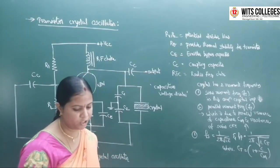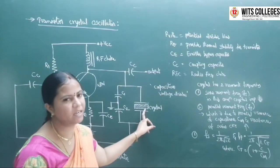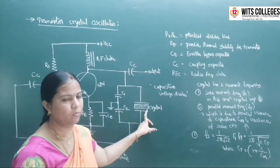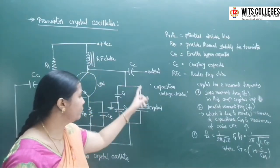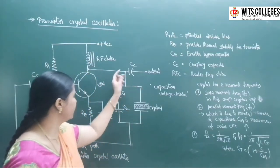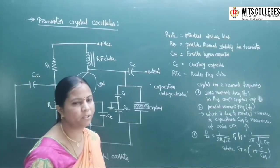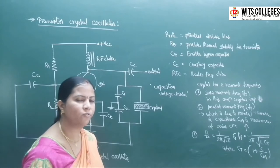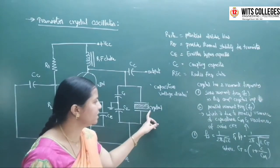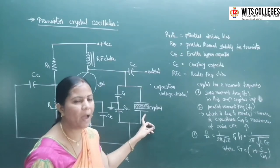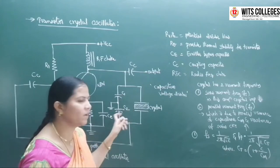Coming to the circuit operation — in crystal oscillators, the crystal acts as an inductor. In the transistor crystal oscillator, the tuned circuit connecting the output to the input is the feedback path. The tuned circuit is similar to the Colpitts oscillator, so in place of the inductor we connect the crystal. It forms a parallel tuned circuit with capacitors C1 and C2.